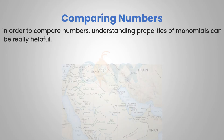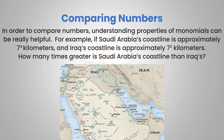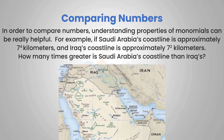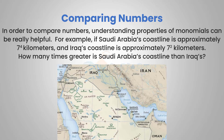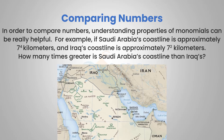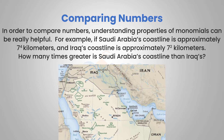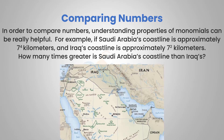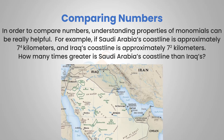In order to compare numbers, understanding properties of monomials can be really helpful. For example, if Saudi Arabia's coastline is approximately 7 to the 4th kilometers and Iraq's coastline is approximately 7 to the 2nd kilometers, how many times greater is Saudi Arabia's coastline than Iraq's? In order to solve this, we'll use the information in the lesson and revisit it at the end.